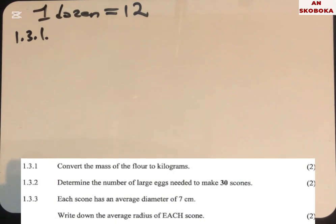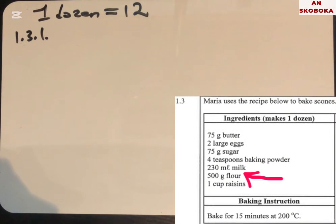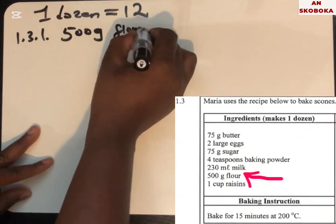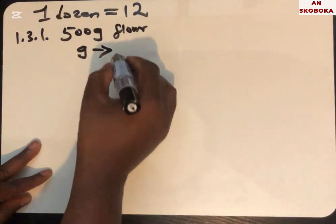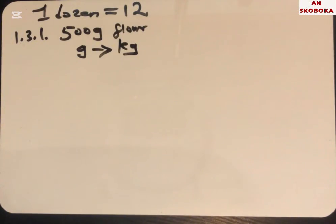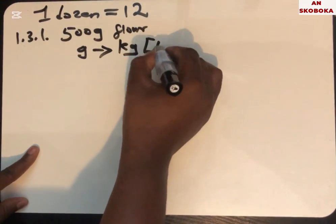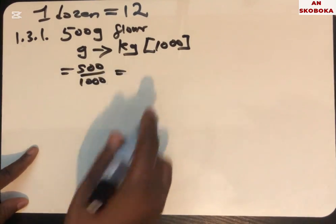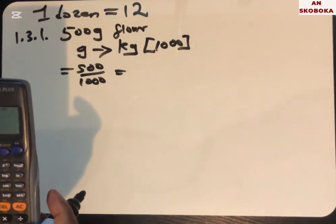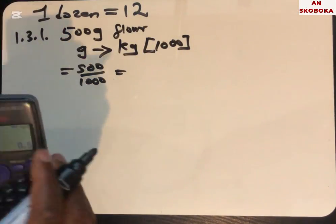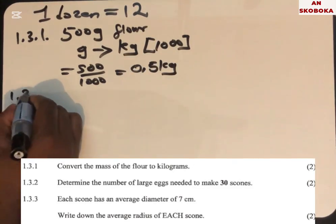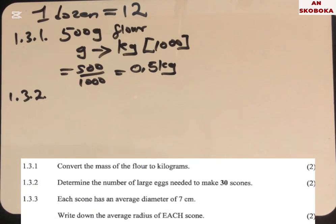Question 1.3.1: convert the mass of the flour to kilograms. The flour is 500 grams. The converting factor between grams and kilograms is 1000. So 500 divided by 1000 equals 0.5 kg.